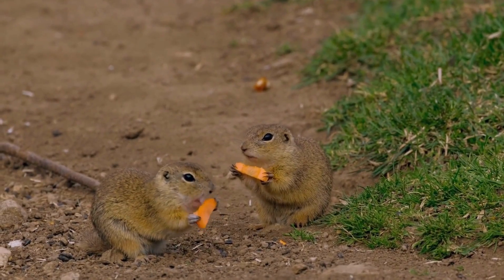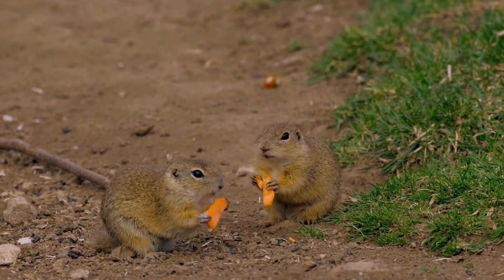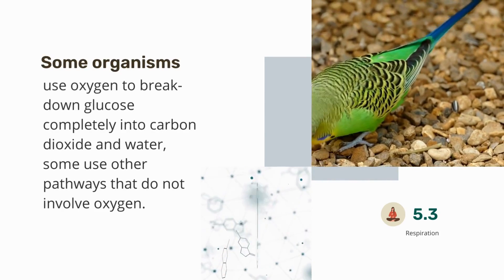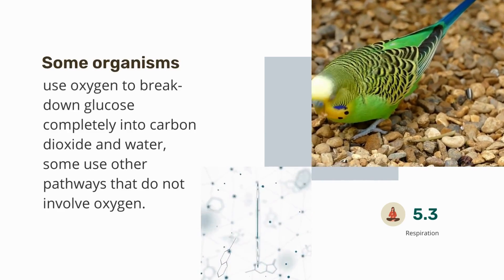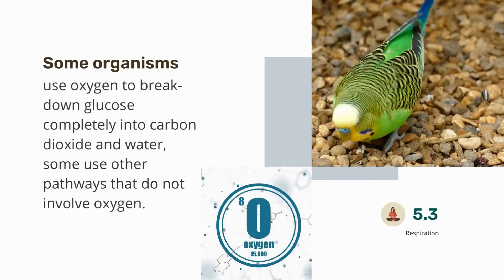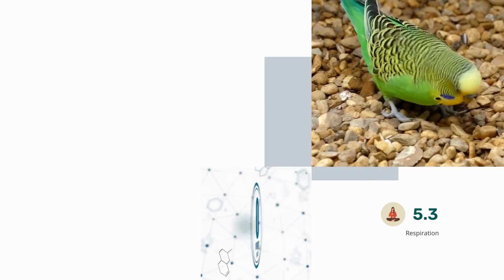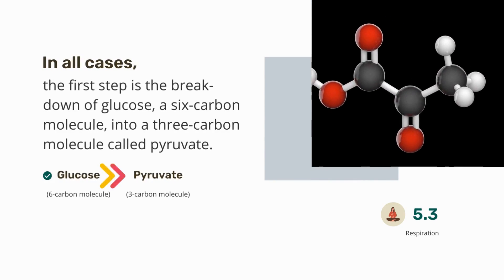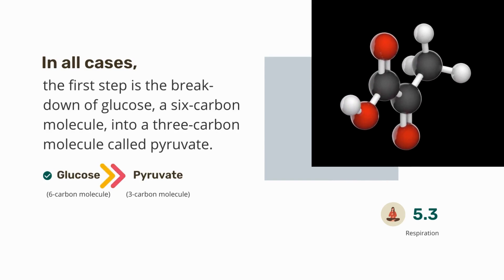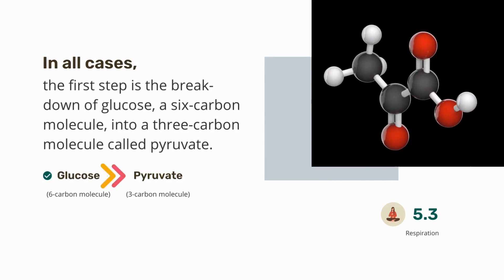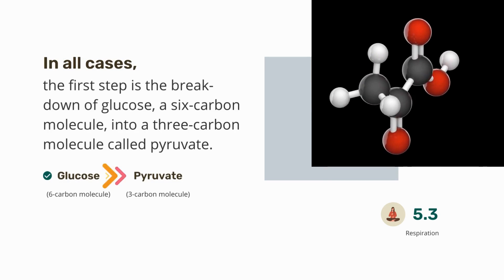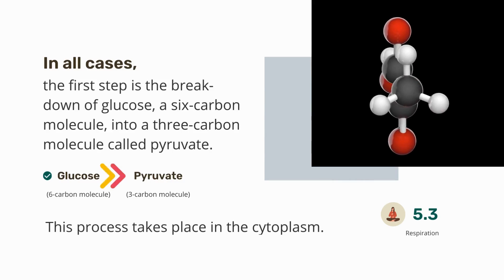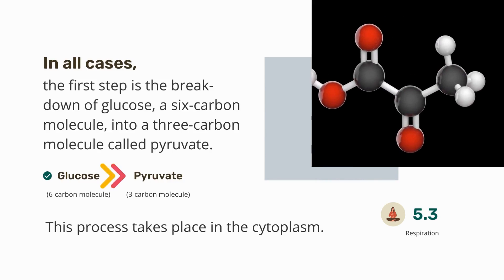Diverse organisms do this in different ways. Some use oxygen to break down glucose completely into carbon dioxide and water; some use other pathways that do not involve oxygen. In all cases, the first step is the breakdown of glucose — a six-carbon molecule — into a three-carbon molecule called pyruvate. This process takes place in the cytoplasm.